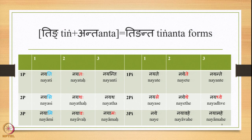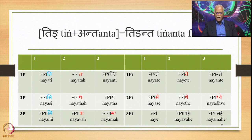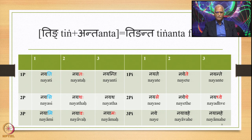The Ting forms are: Nayati, Nayatah, Nayanti; Nayasi, Nayathah, Nayatha; Nayami, Nayavah, Nayamaha; and Nayate, Nayete, Nayante; Nayase, Nayethe, Nayadhve; Nayave, Nayamahe. In cases like Nayatah, Nayathah, Nayavah, Nayamaha, the Sandhi has already taken place. Other Sandhis involving Sa at the end in a given specific environment are also studied under Swadhi-Sandhi, which is why this is a peculiar chapter in the Panchasandhi Prakarana.